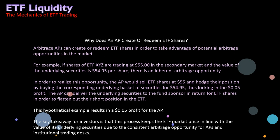Arbitrage is another reason APs can create or redeem ETF shares — to take advantage of potential arbitrage opportunities. For example, let's say shares of ETF XYZ are trading at $55 in the secondary market where you and I trade, and the value of the underlying securities is $54.95. There is an inherent arbitrage opportunity. The AP would sell ETF shares at $55 and hedge their position by buying the corresponding underlying basket of securities for $54.95, locking in the five-cent profit.